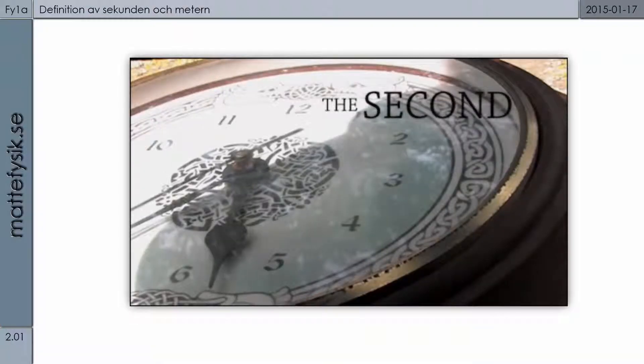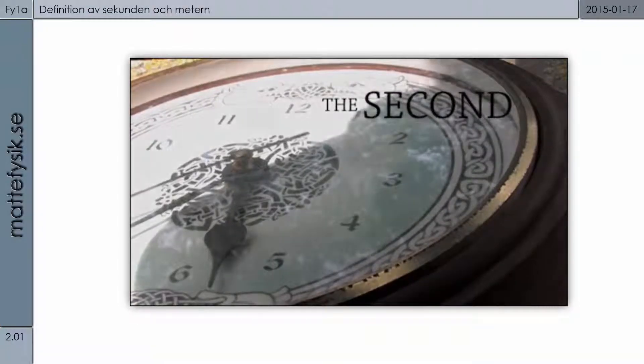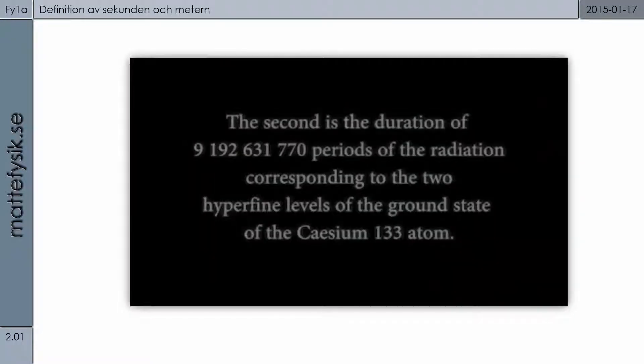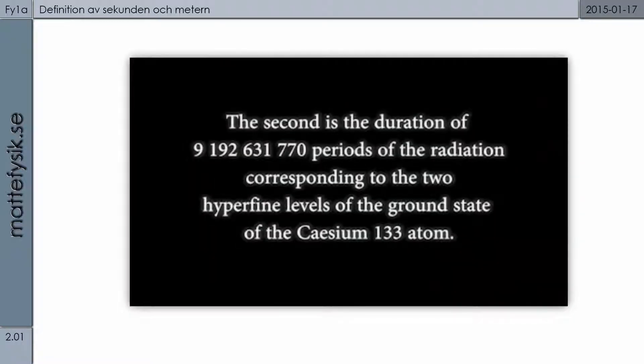This episode, the second. The second is the duration of 9,192,631,770 periods of the radiation corresponding to the two hyperfine levels of the ground state of the cesium-133 atom.